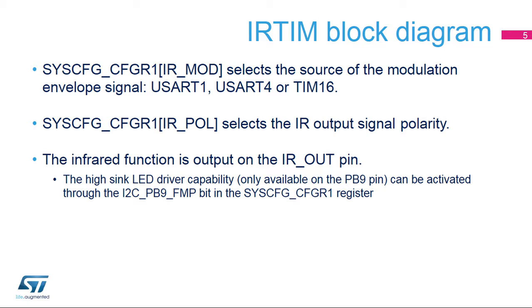The IR pole field in the SYSCFG_CFGR1 register selects the polarity of the IR output signal. GPIO PB9 can be configured to support high-driving capability in order to accommodate the high-current capability of the IR LED. GPIO PA13 does not support this option.